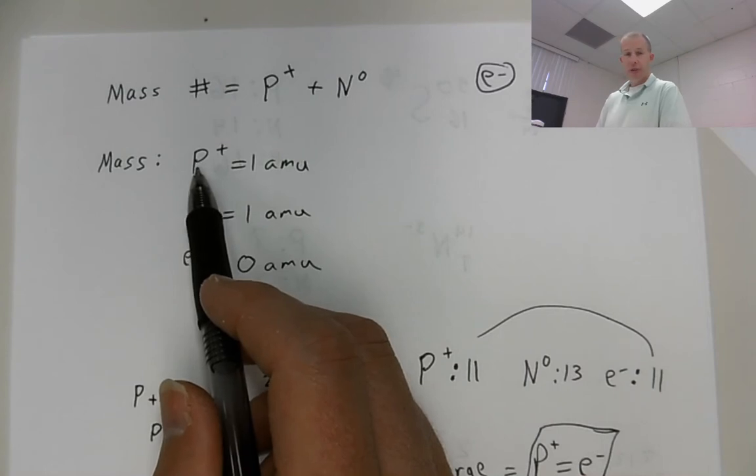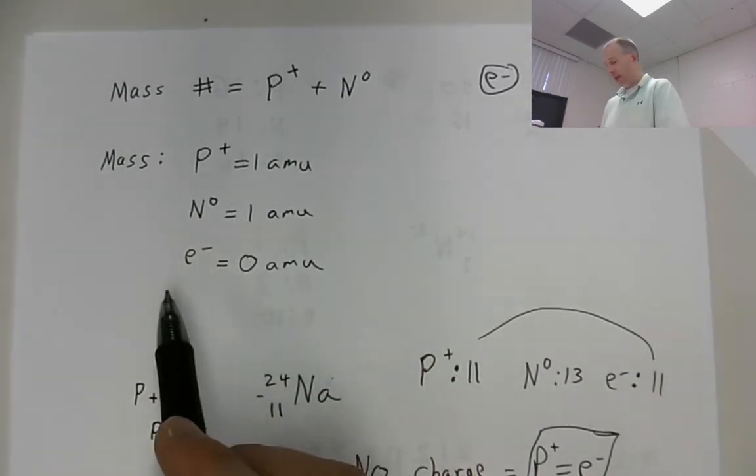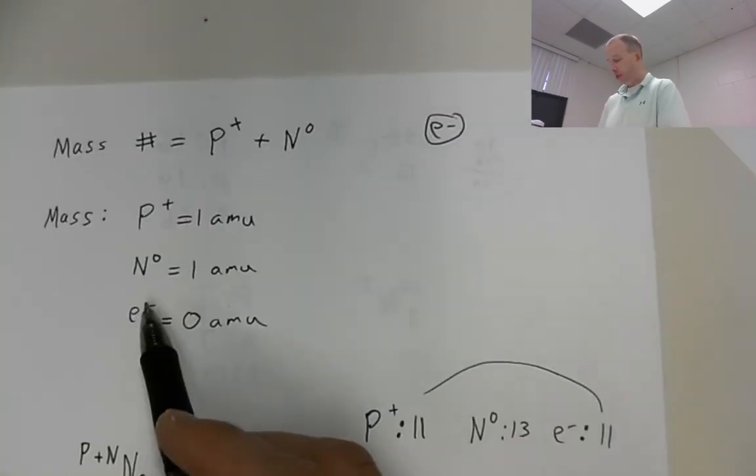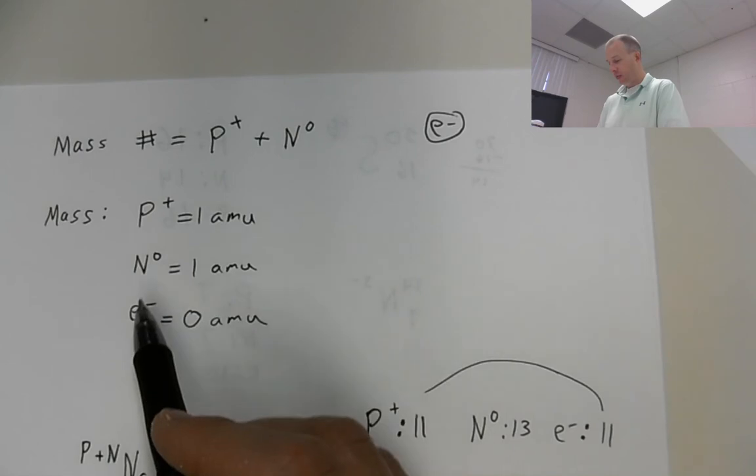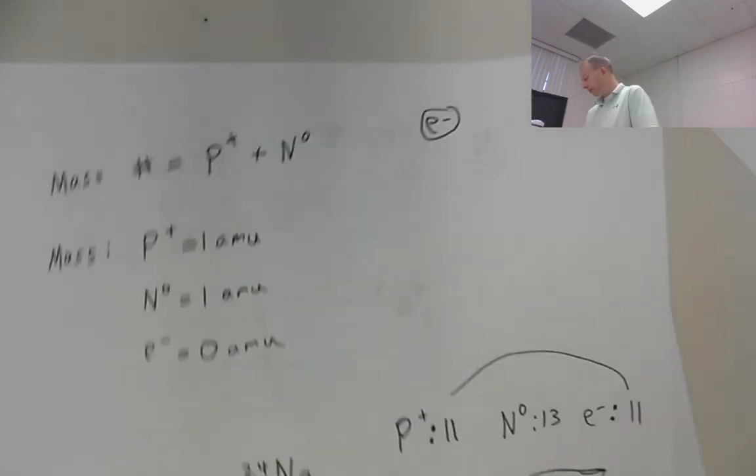The masses of the proton and the neutron are both 1 amu. The relative mass of the electron is 0 amu. The symbols, you know, proton is this symbol, neutron is this symbol, electron is that symbol. That's generally what you're going to see right now. So what I want to do, I'm just going to do a couple of examples, a few more, and just go over them with you. Then hopefully that'll make it clear as far as how you're going to do all these.